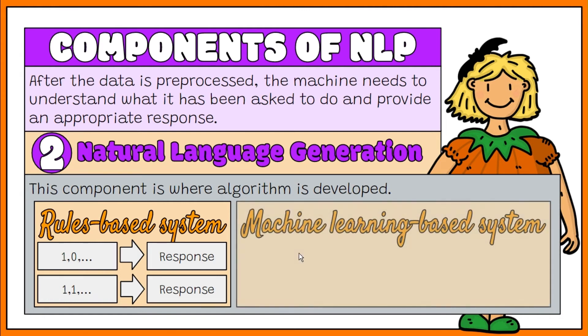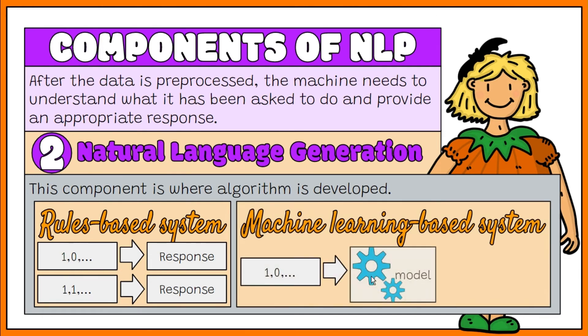The second is a machine learning-based system. Machine learning algorithms use statistical methods. They learn to perform tasks based on the training data they are fed and adjust their methods as more data is processed.